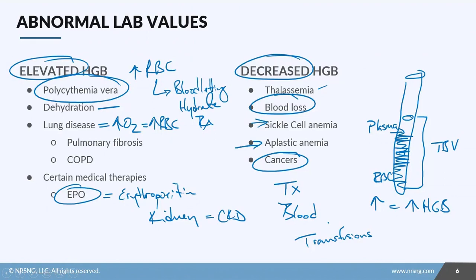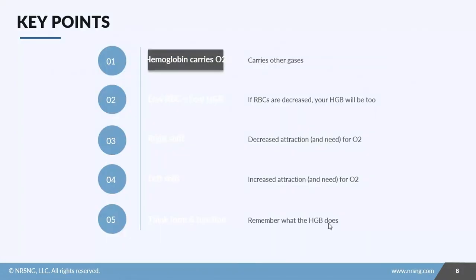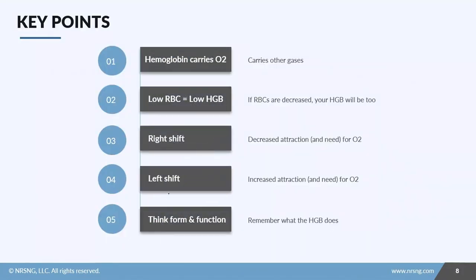Blood transfusions are going to help increase that overall red blood cell and hemoglobin concentration. For our lessons for this concept, we really focused a lot on lab values and oxygenation for our patient. Let's recap. Hemoglobin is responsible for carrying oxygen—also because it carries other gases—but we want to focus on its ability to carry oxygen. If you have a patient that has low red blood cells, you're also going to have a low hemoglobin. If your RBCs decrease, your hemoglobin is going to decrease too.